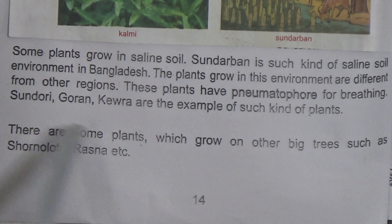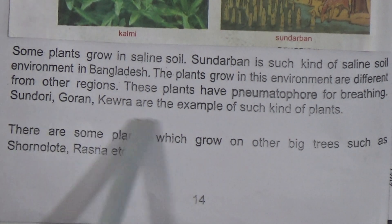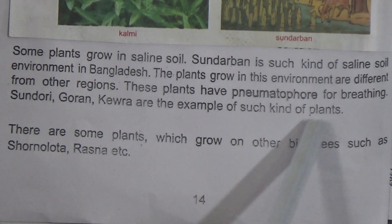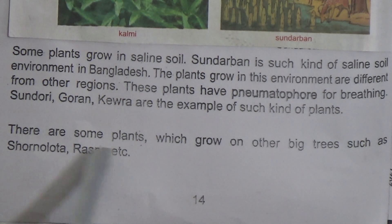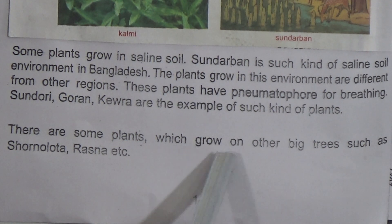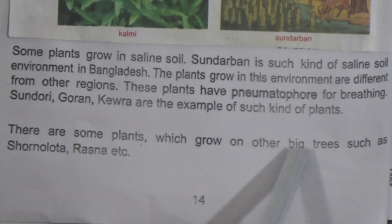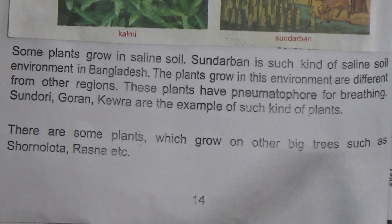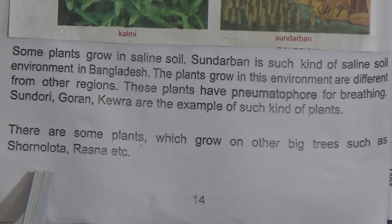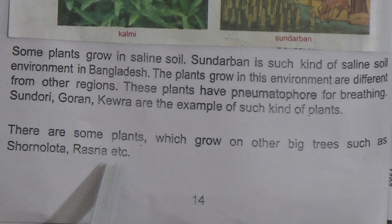Shundari, Goran, and Keora are examples of such plants that grow in the Sundarbans. There are also some plants which grow on other big trees, such as Shornulota and Rasna.